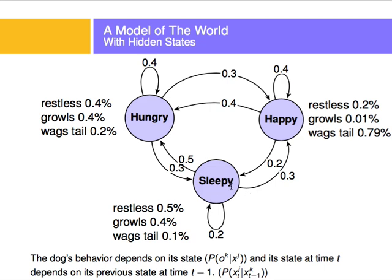The dog's behavior depends on its state — that's the emission probability — and its state at time T depends on its previous state at time T minus 1. This is key. I'm not going to make the state depend on many previous states; I'm just going to make it depend on the previous state. I don't care if three hours ago the dog was hungry — only the immediately previous state matters.